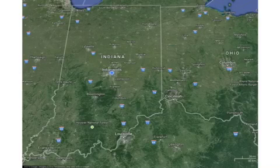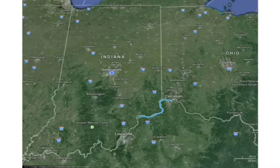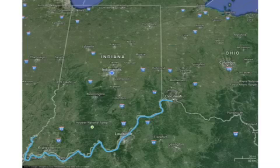Now we're going to take the terms we just learned regarding borders and boundaries and apply them to Indiana. First off, we have a physical boundary to our south, and that would be the Ohio River, which forms our border between Indiana and Kentucky. But we also have a physical boundary on the southwestern part, and that's the Wabash River.